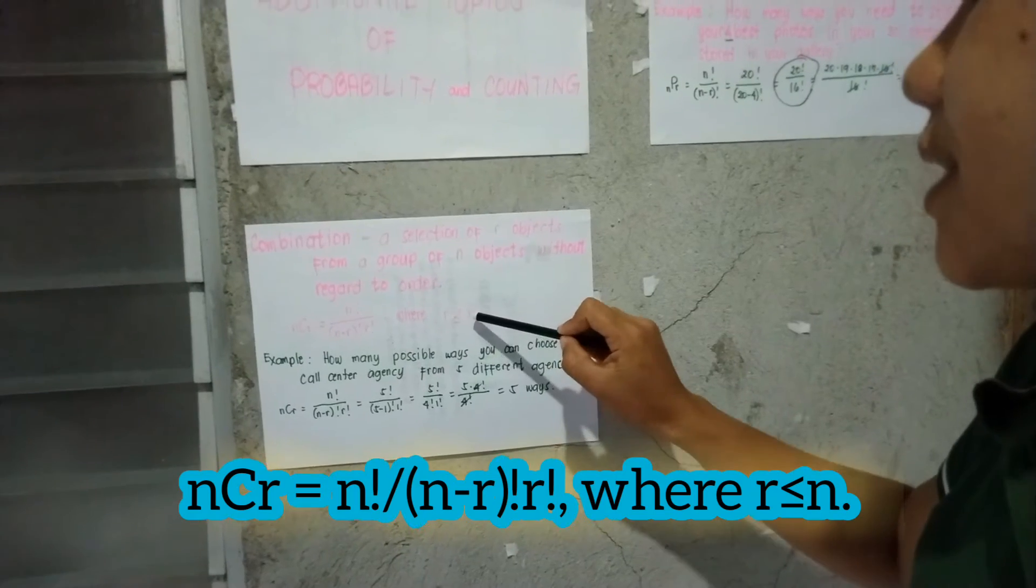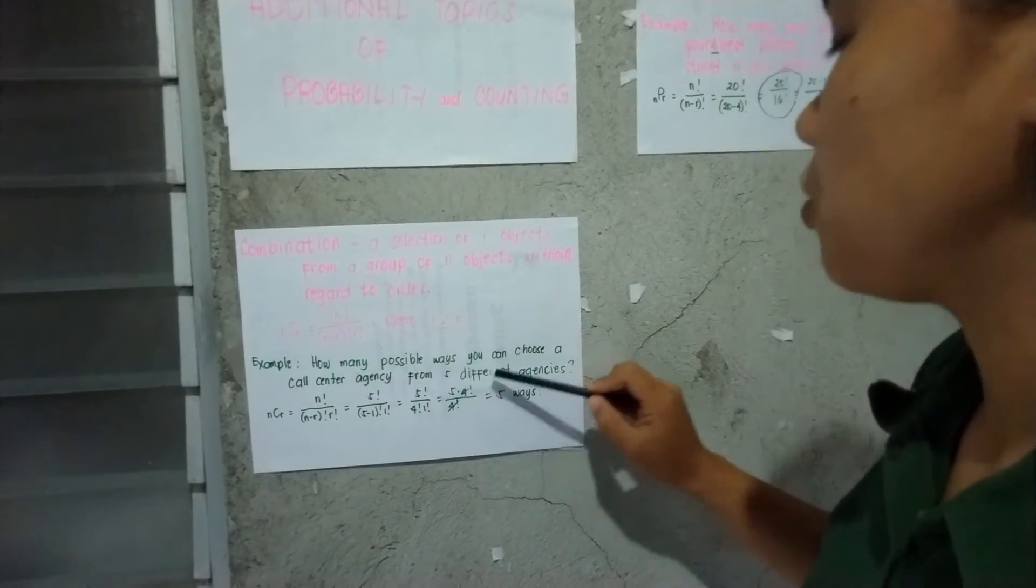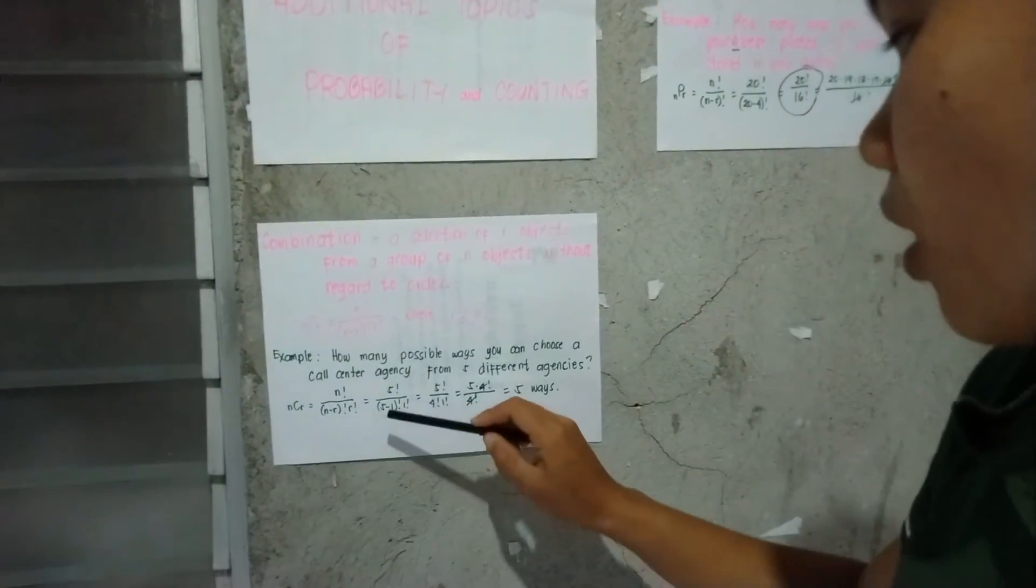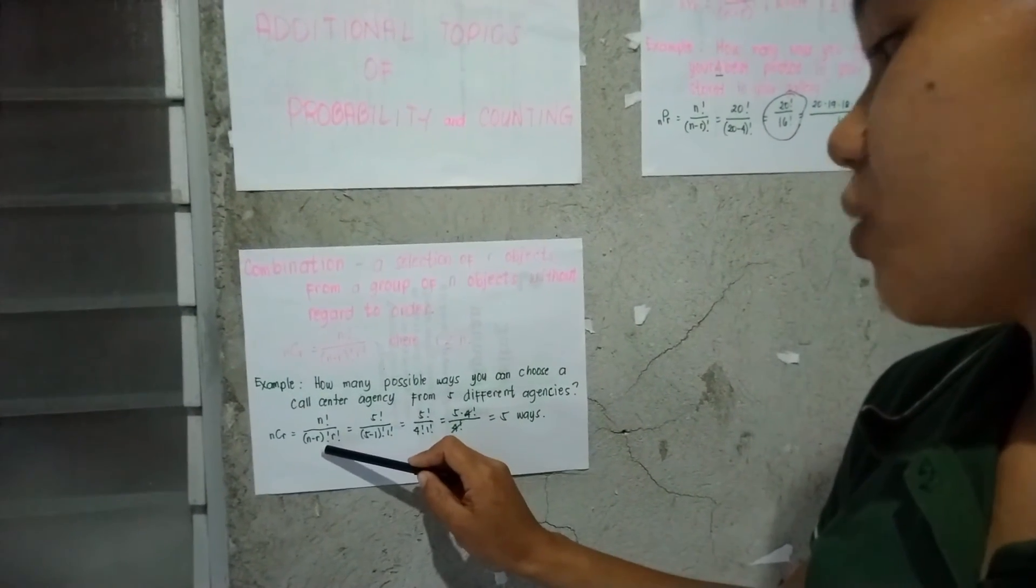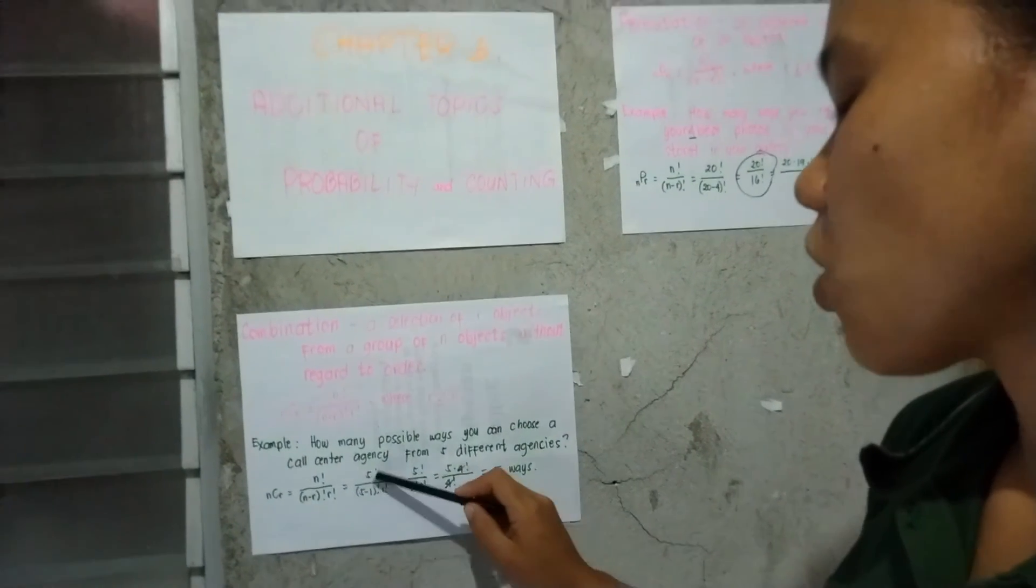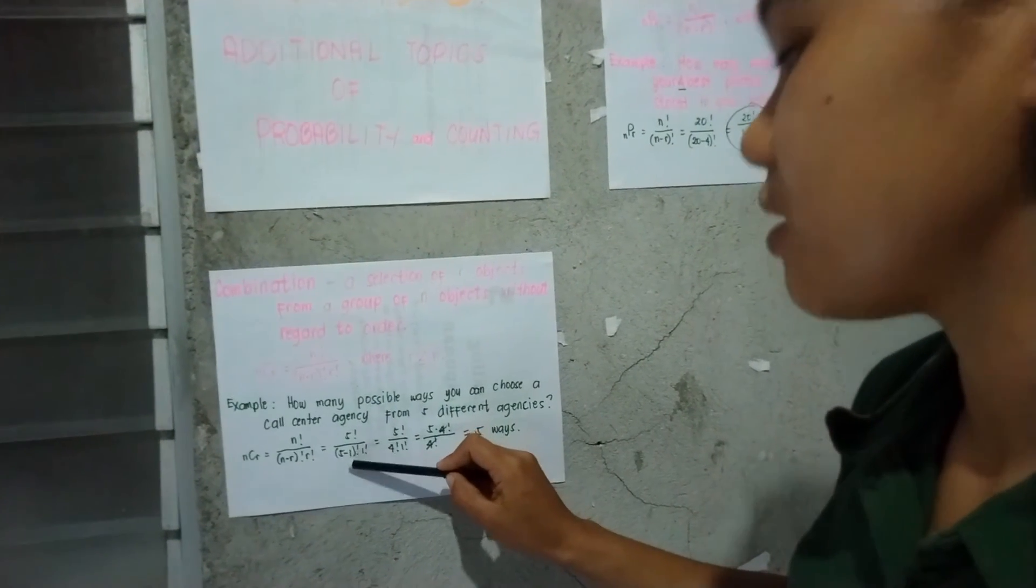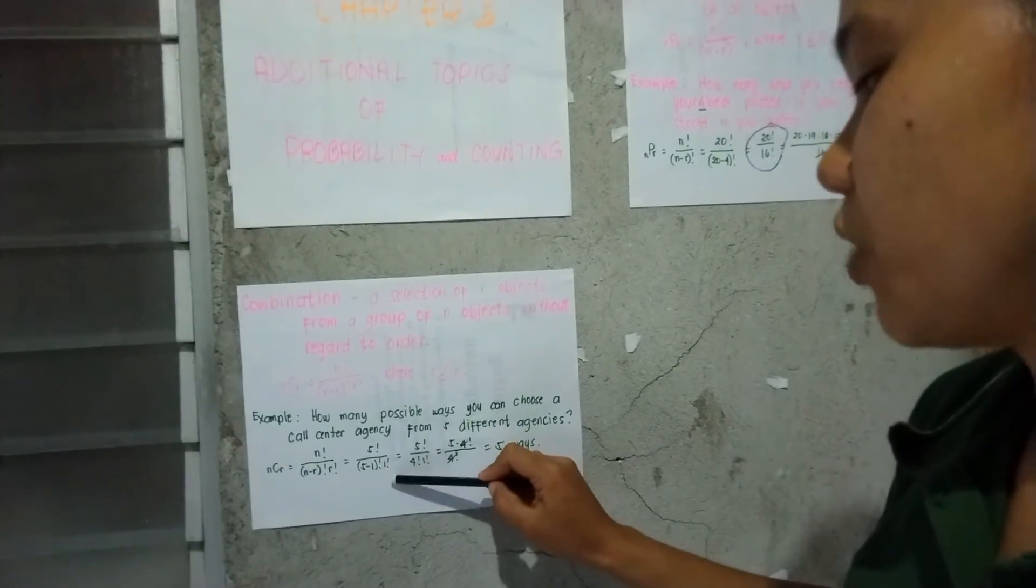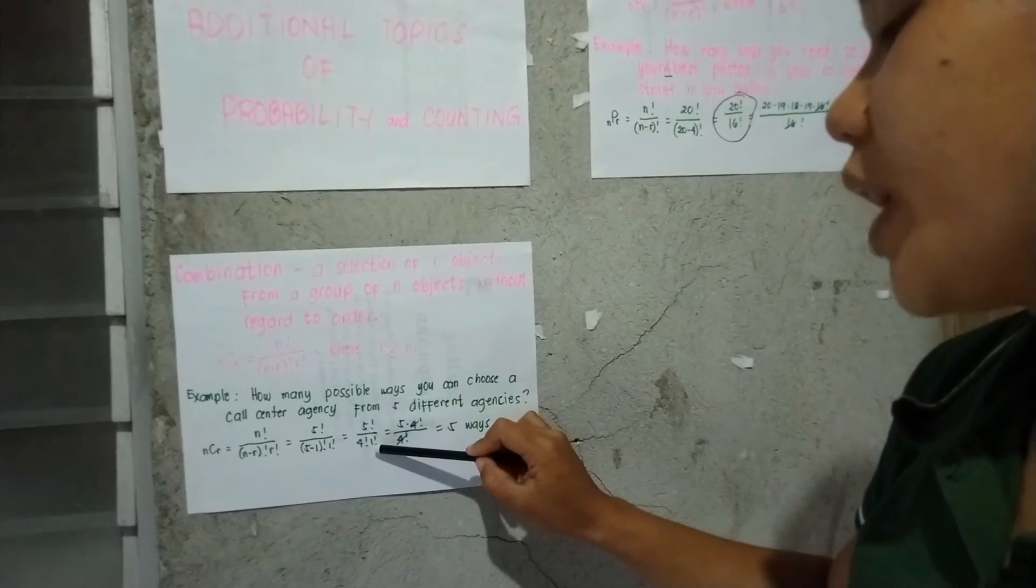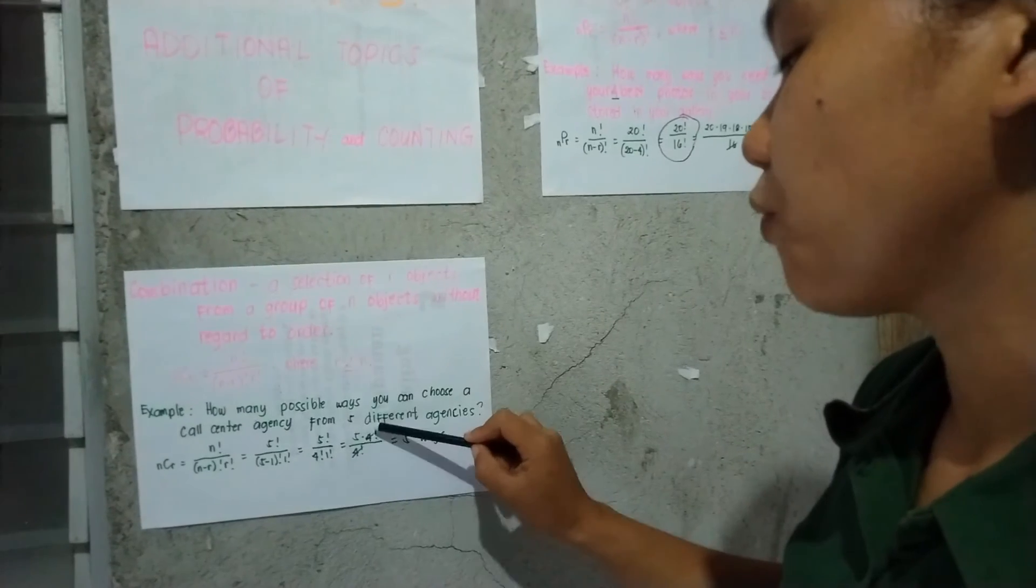For example: How many possible ways can you choose a call center agency from five different agencies? Here n is 5 and r is 1. n factorial over [(n minus r) factorial times r factorial] equals 5 factorial over [(5 minus 1) factorial times 1 factorial]. This equals 5 over (4 factorial times 1 factorial), which simplifies to 5 times 4 divided by 4, giving us 5 ways.